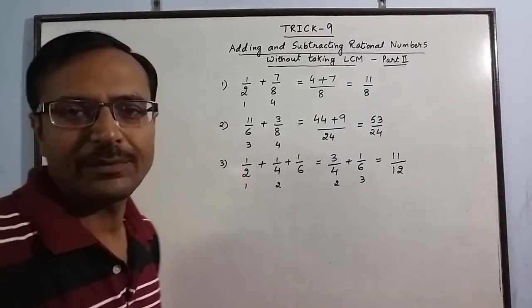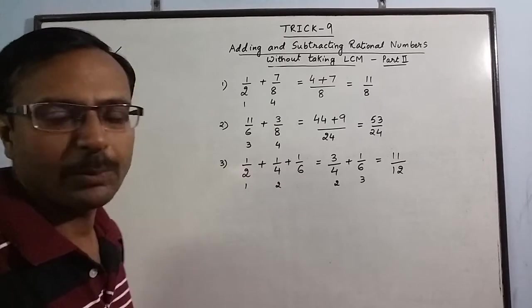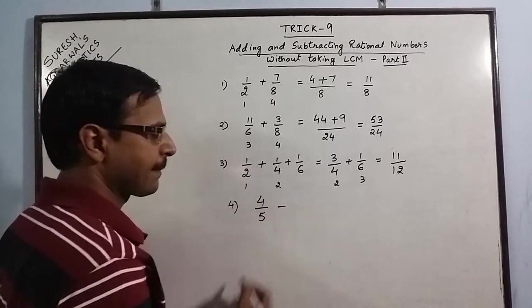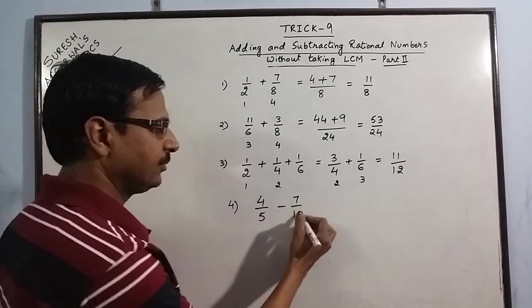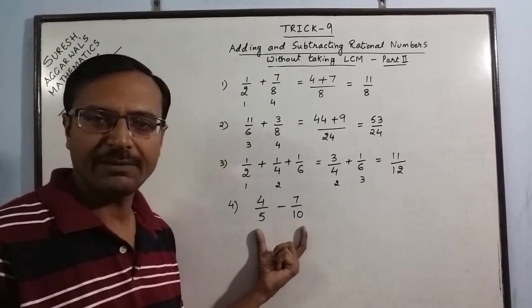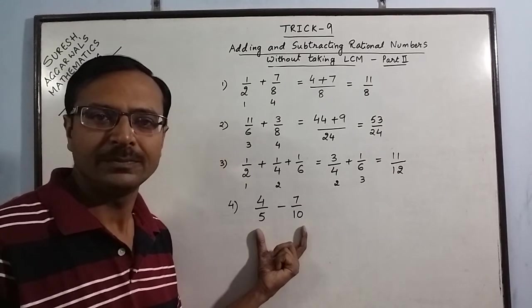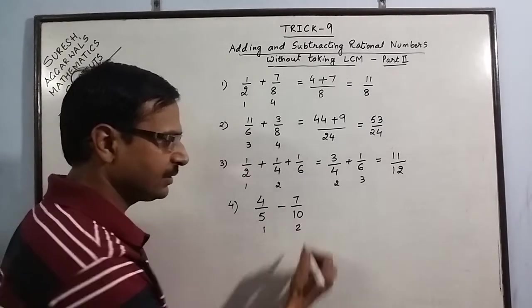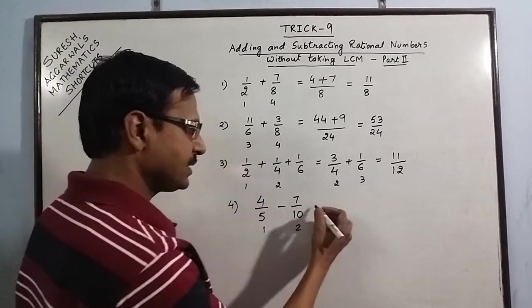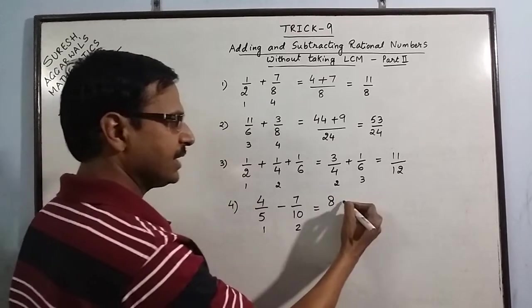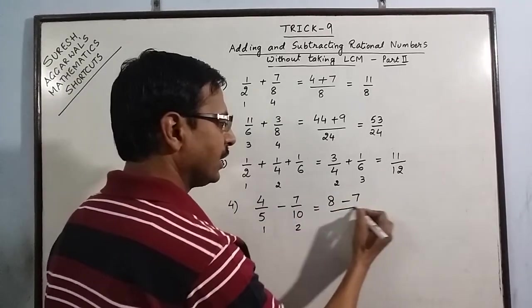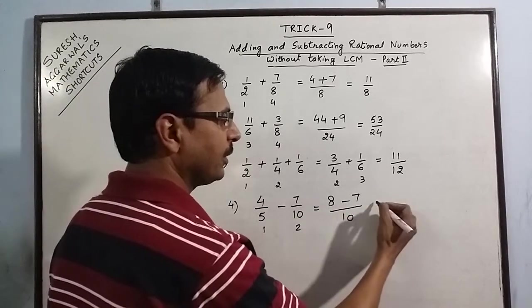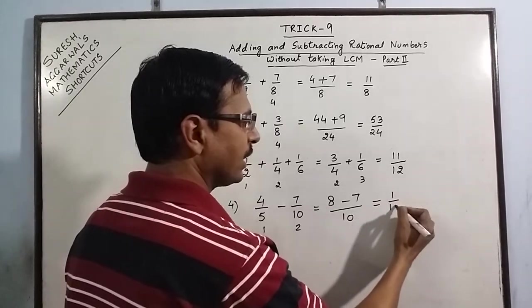Now let us take one problem of subtraction involving a common factor in the denominators. Say we have 4 upon 5 minus 7 upon 10. Now again these two denominators have a common factor of 5 between them. So we cancel out 5. 5 ones are 5, 5, 2 the 10. 4, 2 the 8 minus 7 ones are 7 upon either 5, 2 the 10 or 10 ones are 10. So 10 is in the denominator. So the answer is 1 upon 10.